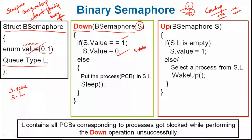If the value is not 1 — that is, if the value is 0 — we put the process in the queue and send it to sleep mode. To summarize: if the semaphore value is 1 (positive), allow critical section execution, but first make the semaphore value 0 so no other process can enter. If the semaphore value is 0, put the process in the queue and send it to sleep mode. Whenever the critical section is free, the process will be woken up. This is the down operation on the binary semaphore.